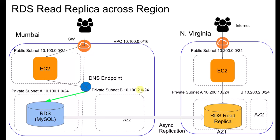Hi all, this is Chetan. In this video we are going to see how to create an RDS read replica across AWS regions. RDS provides us the ability to create read replicas in the same or a different AWS region.